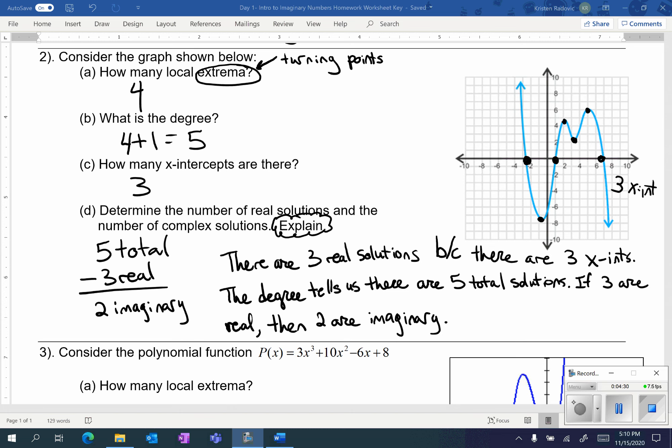Basically, all I did is I took what we wrote on the side, like the five total minus the three real gives me two imaginary, and I put it in a sentence. Let's go on to the next one.